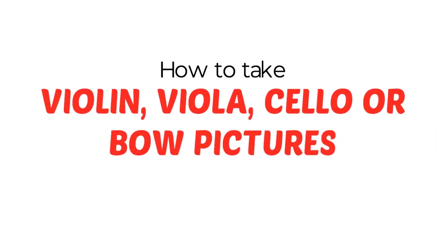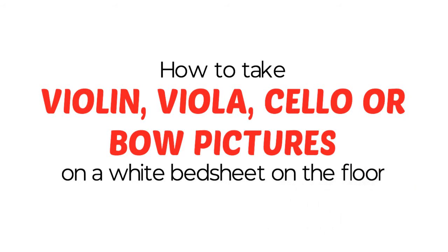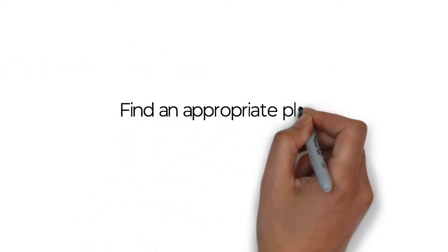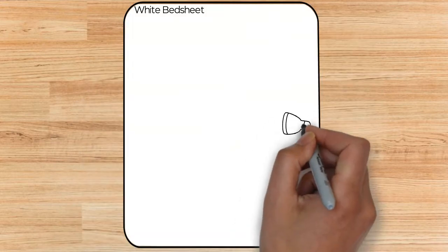How to take violin, viola, cello, or bow pictures on a white bedsheet on the floor. Find an appropriate place when possible with a lot of indirect natural light. Deploy a white bedsheet on the floor.